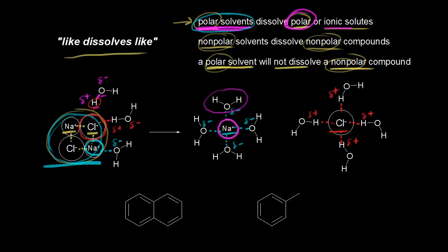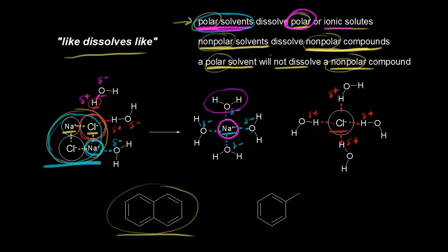Let's move on to a nonpolar compound. A nonpolar compound is something like naphthalene, which is a solid with a very distinctive smell. Naphthalene is nonpolar because it's composed of only carbons and hydrogens — it's a hydrocarbon. So naphthalene is nonpolar and you would need a nonpolar solvent to get it to dissolve. Toluene is a nonpolar solvent — again, it's a hydrocarbon. So if you take solid naphthalene and liquid toluene, naphthalene will dissolve in toluene. So like dissolves like — our nonpolar solvent will dissolve our nonpolar compound.